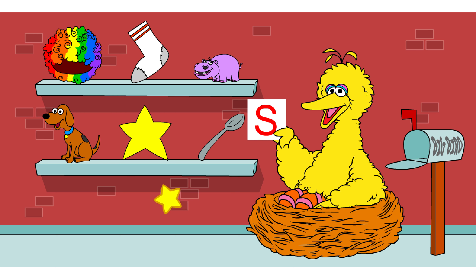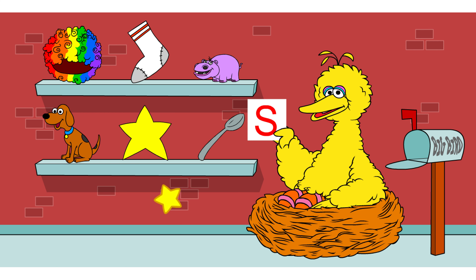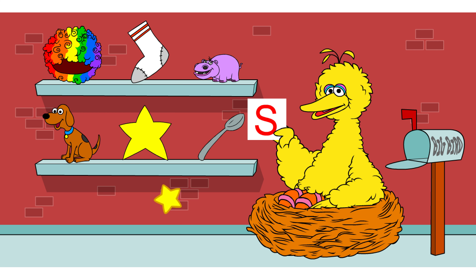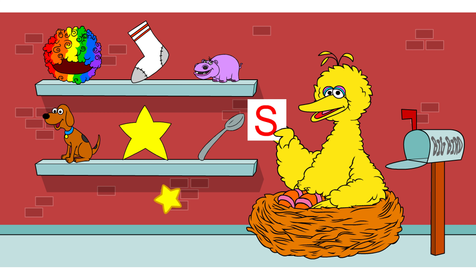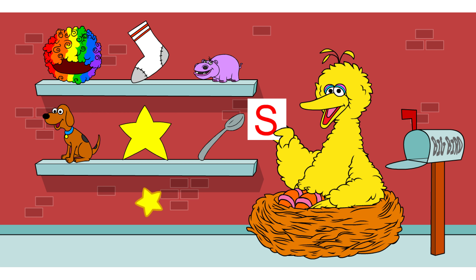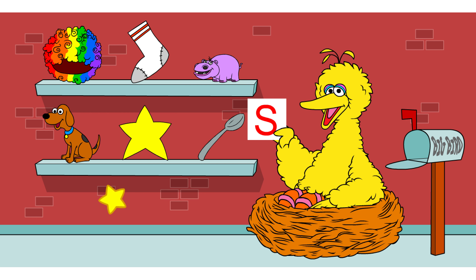There's another letter in my mailbox. This is the letter S. There are three things on my shelves that start with this letter. See if you can find them. Click on something that starts with the letter S.